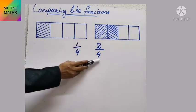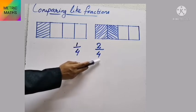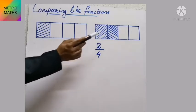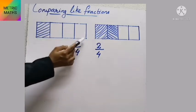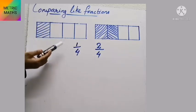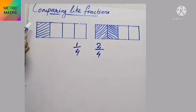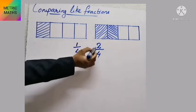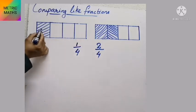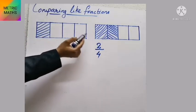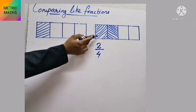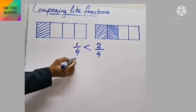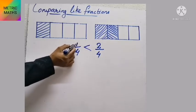Now let's study how to compare two like fractions. Look at 1 by 4 and 2 by 4 — the denominators are the same. The first figure shows 1 by 4 and the second shows 2 by 4. For comparing like fractions, the size of the whole part should be the same; if the size is different, we can't compare. So look at the numerators: the first numerator is 1 and the second is 2. Since 2 is bigger, 2 by 4 is the bigger fraction.